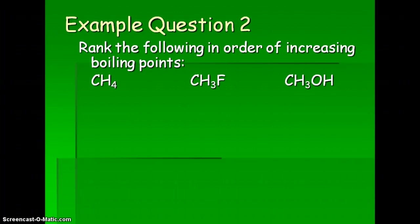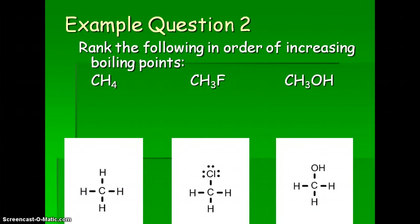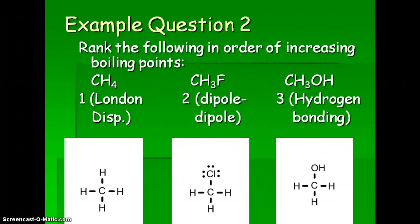Example question two: rank the following in order of increasing boiling points. CH4 is tetrahedral and non-polar with all hydrogens bonded to carbon. CH3Cl is also tetrahedral but with a chlorine attached, making it polar. CH3OH is also tetrahedral but has oxygen bonded to hydrogen, so it's polar with hydrogen bonding. The lowest boiling point is CH4 with London dispersion forces. The second highest is CH3Cl with dipole-dipole forces. The highest boiling point is CH3OH because it has hydrogen bonding.